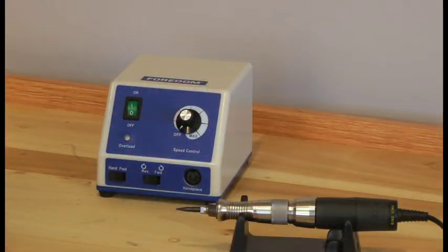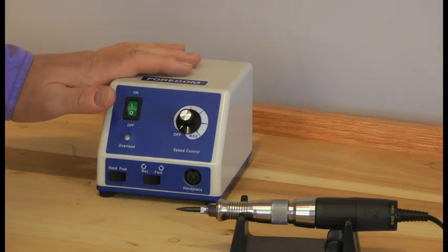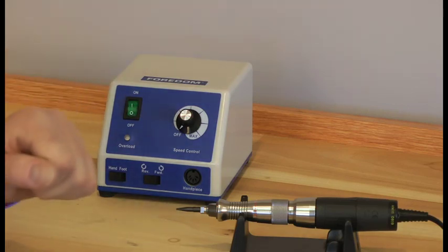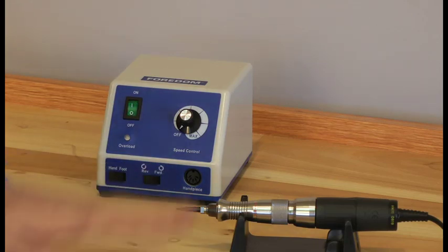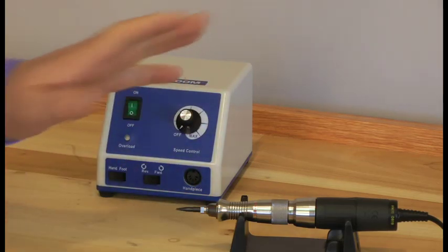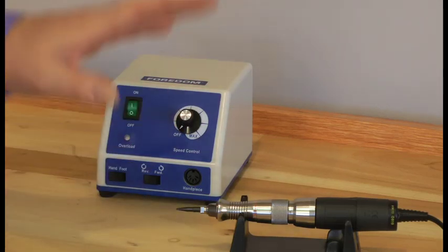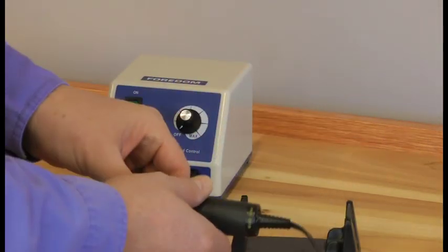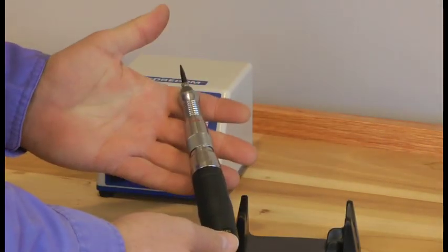We have one more hand piece that goes with this control box. It's our micro motor hammer hand piece. And this kit is the 1080 kit. As you can see it does not come with a foot pedal. We also have another kit called the 1090 where you just add this hammer hand piece to our 1070 kit with the foot pedal. And you've got a combined rotary and hammer hand piece kit.